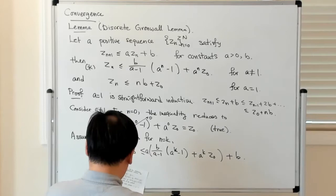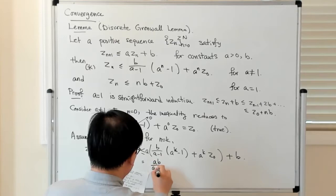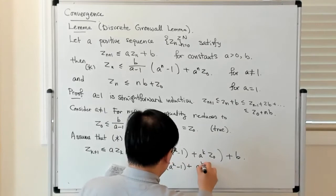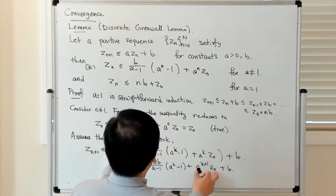So this is equal to AB/(A-1) times (A^k - 1) plus A^{k+1} Z_0 plus B. We have the A^{k+1} term which you would want for n equals k+1.